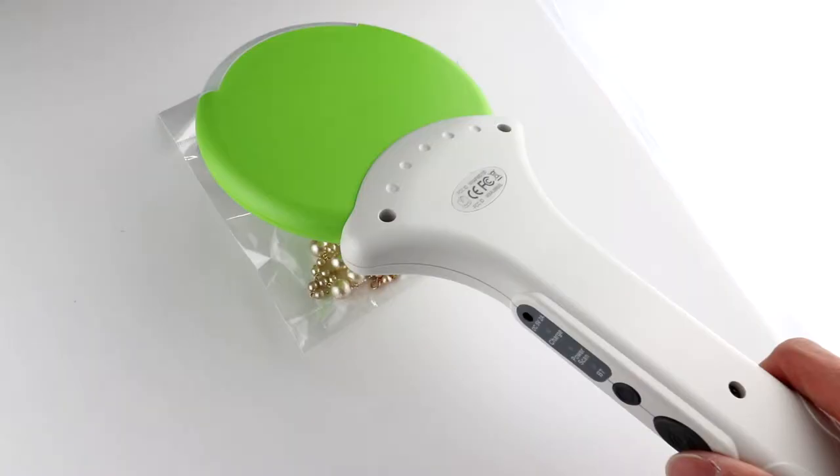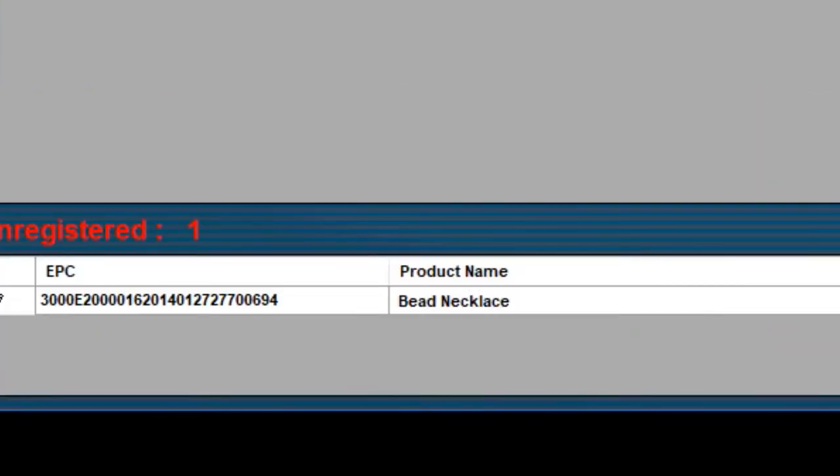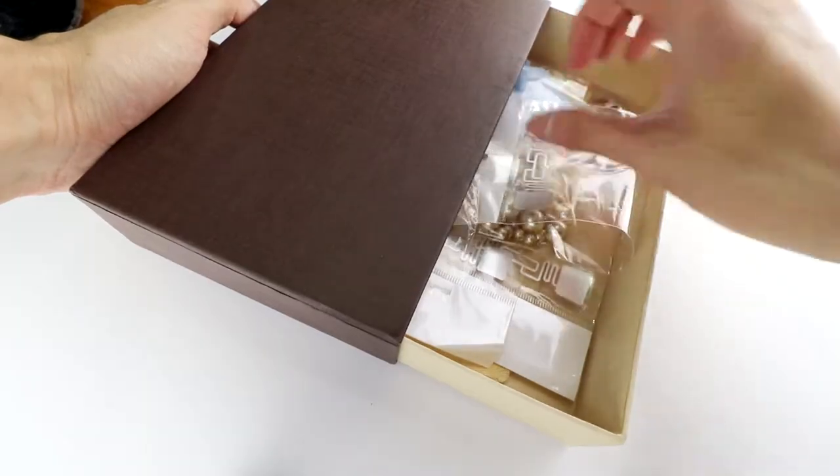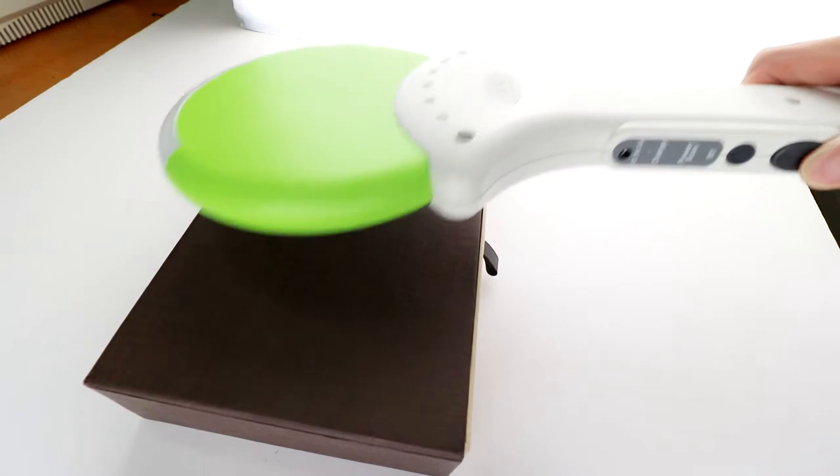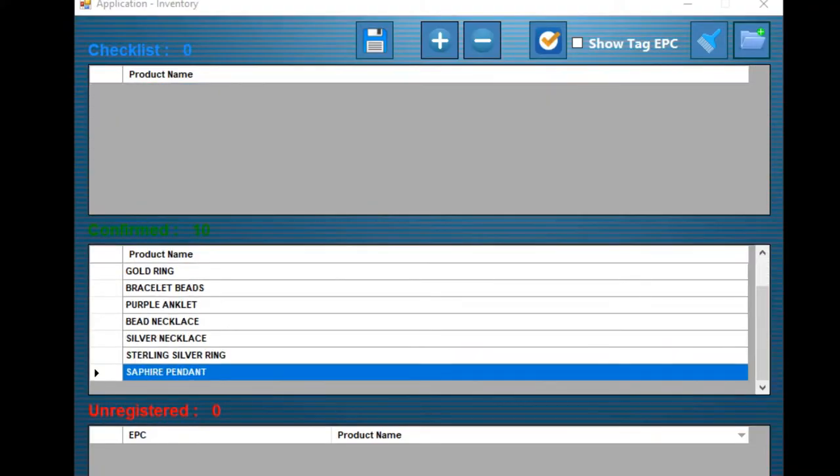How? The process is quite simple. Easily assign RFID tags to your items with our Inventory Manager. When you're ready to track them, hover the U100 over your items and hold the scan button. Almost instantly, our software will indicate which items are there and which are missing.